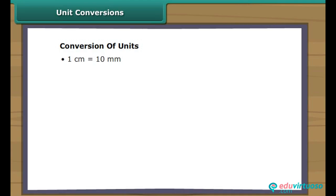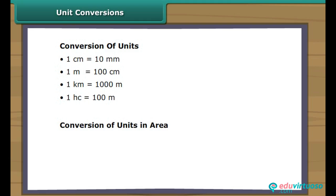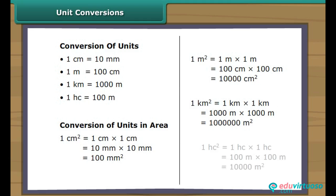Unit conversions. We know that in one centimeter there are ten millimeters. In one meter, there are one hundred centimeters. In one kilometer, there are one thousand meters. In one hectare, there are one hundred meters. Sometimes we require changing from a bigger unit to a smaller unit. Now we know the basics of the unit system, so we can easily convert from a bigger unit to a smaller unit.